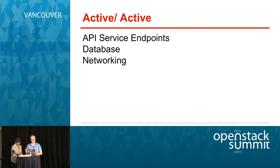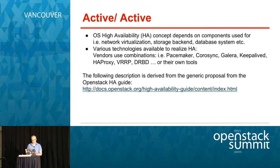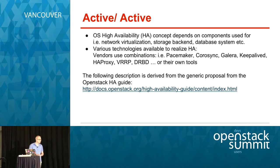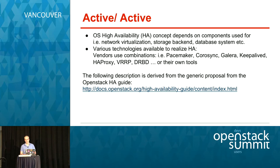I will start with the theoretical part about active-active high availability with API services, database, and networking as the most important parts. Thinking about high availability in OpenStack depends heavily on the technologies you use in your platform. If you use different network virtualization technologies, the HA concept might look completely different. This is true for the storage backend or database systems as well.